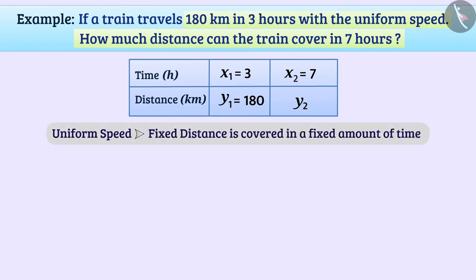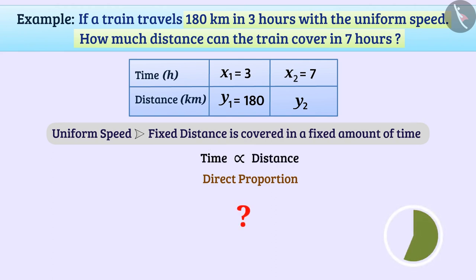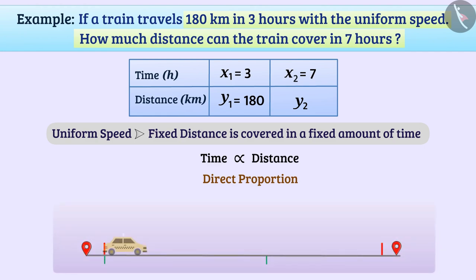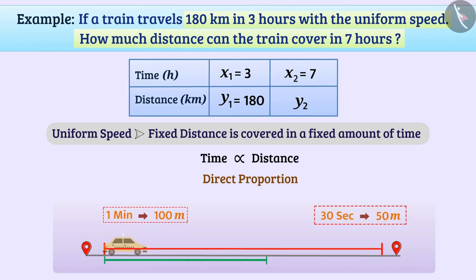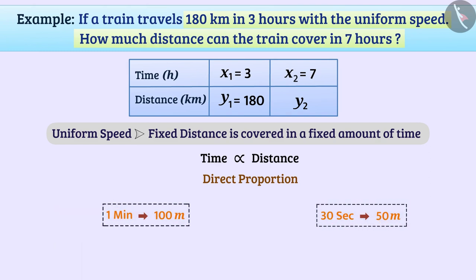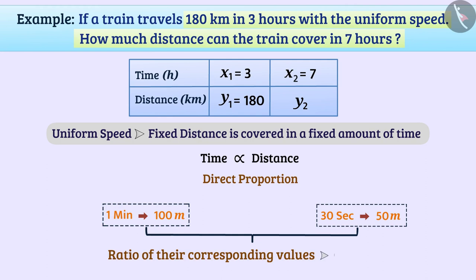Can you tell whether there is a direct proportion in both time and distance here? When the speed is fixed, more distance will be covered in more time and less distance in less time. In the given case, both quantities increase or decrease in such a way that the ratio of their corresponding values remains constant. Therefore, we can say that time and distance are in direct proportion.